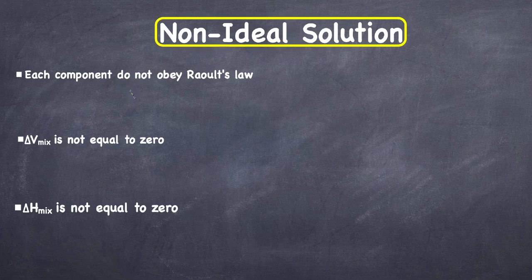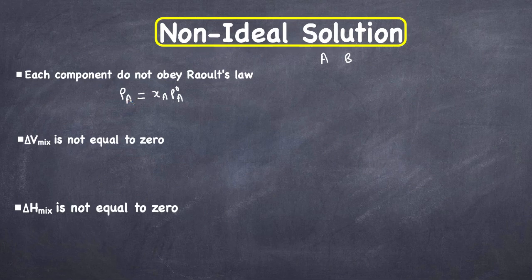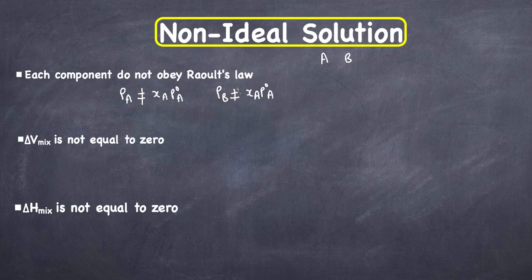From Raoult's law, for two components A and B, P_A equals X_A times P°_A. But for non-ideal solutions, P_A is not equal to X_A times P°_A, and similarly P_B is not equal to X_B times P°_B. There are two types of non-ideal solutions.